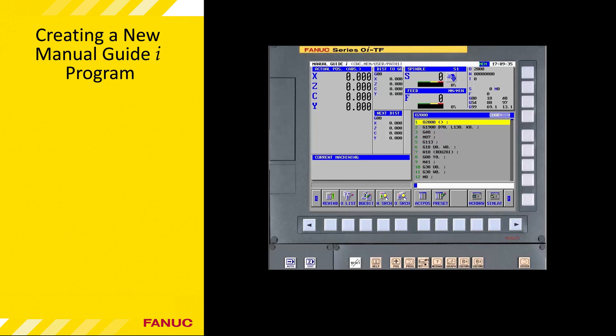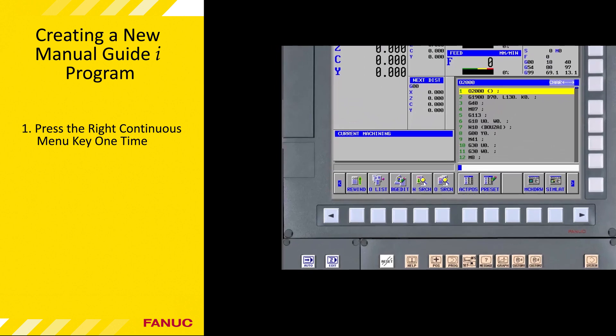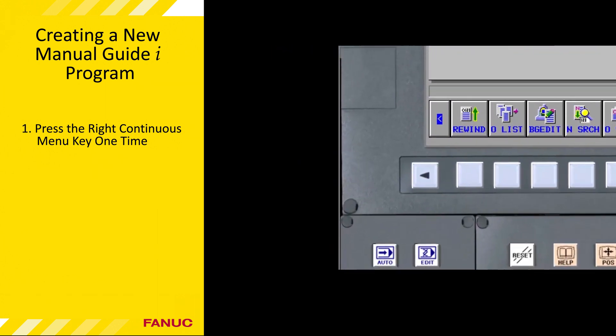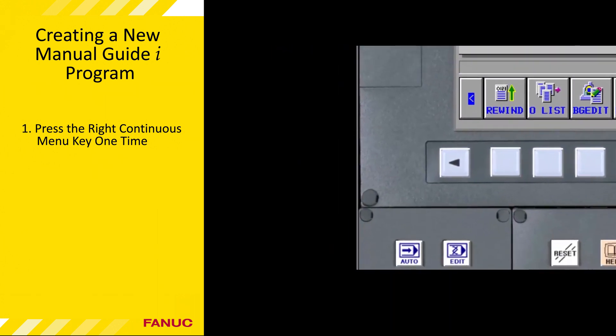Machine tool builders use either a collection of push buttons or a rotary selector switch to allow the operator to select the CNC mode. Refer to the machine operator manual that came with your machine to determine how to select edit mode on your particular machine.